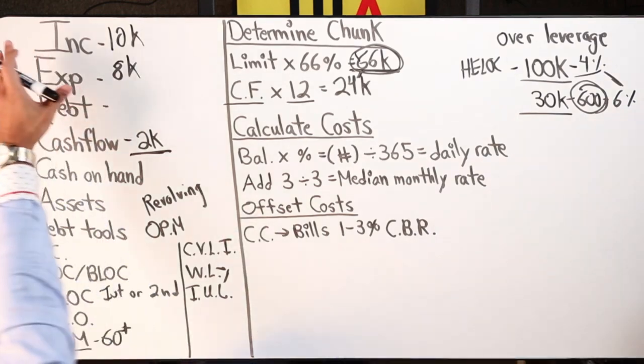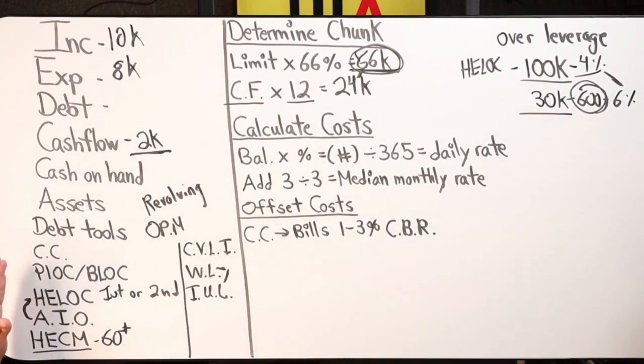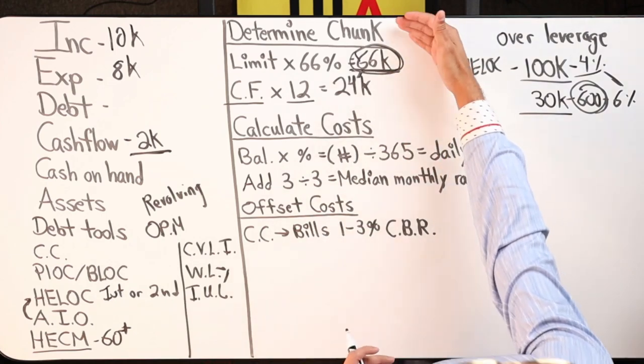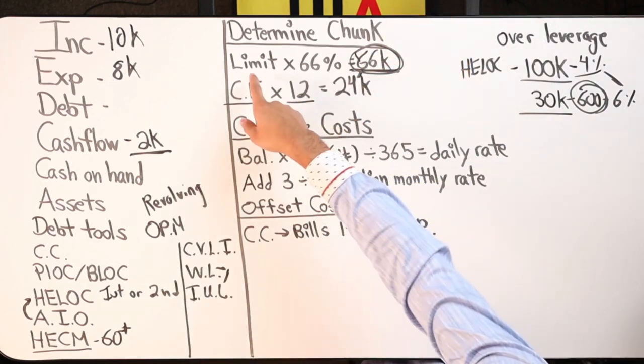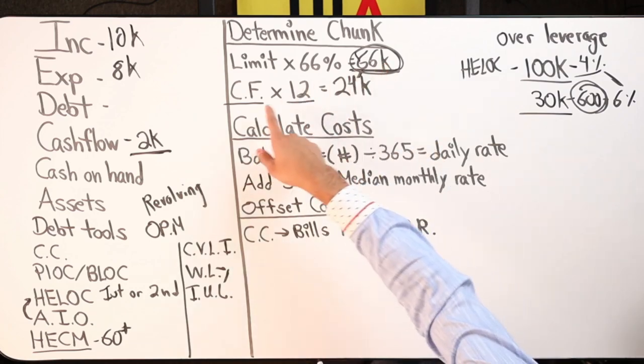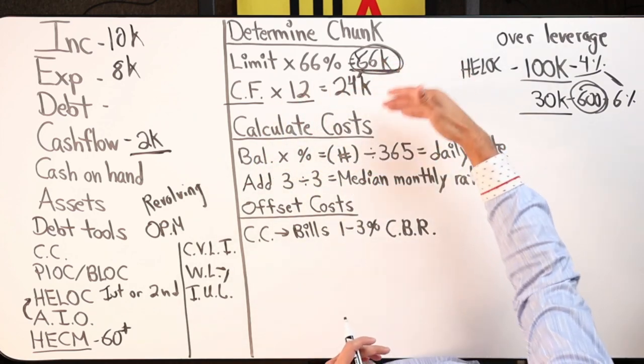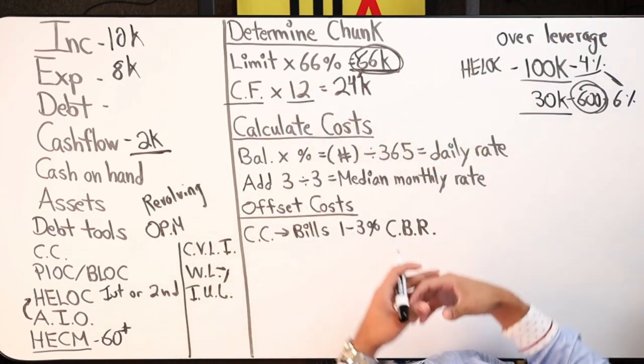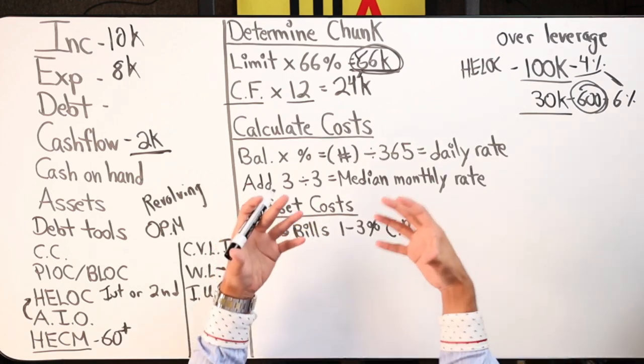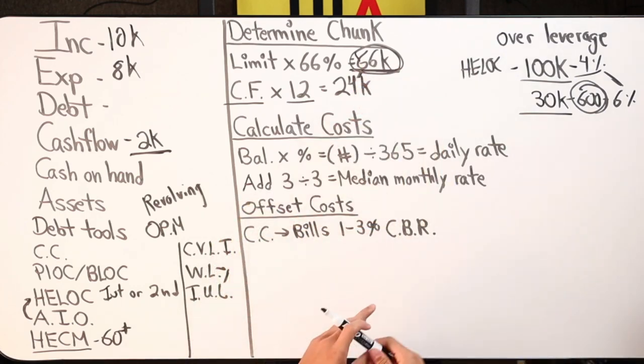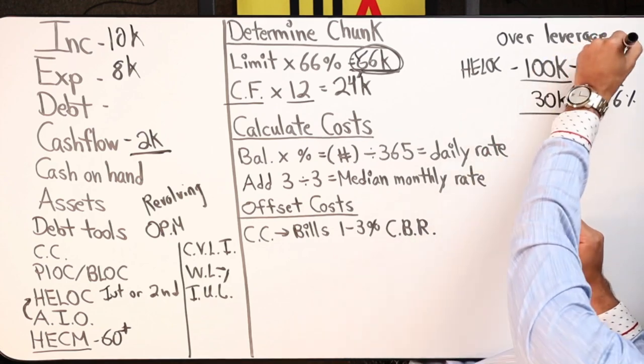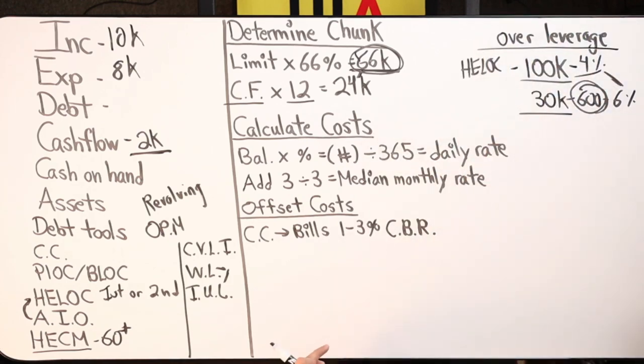Quick recap. Number one, know your numbers. Number two, what's your debt tool? Number three, determine your chunk. How? Take the limit times 66%, cash flow times 12, you have a chunk range.